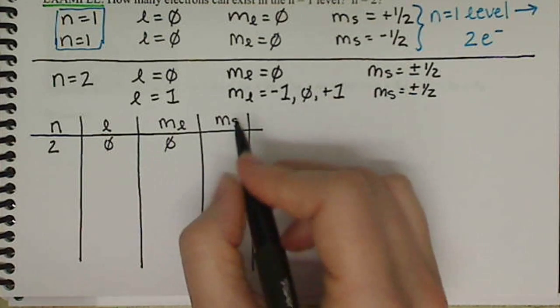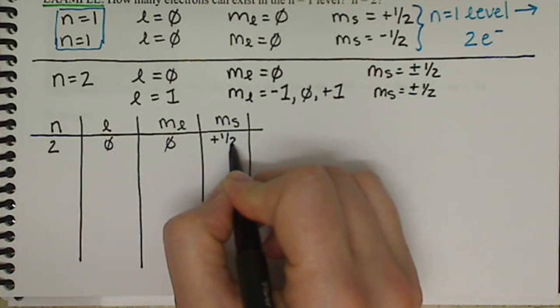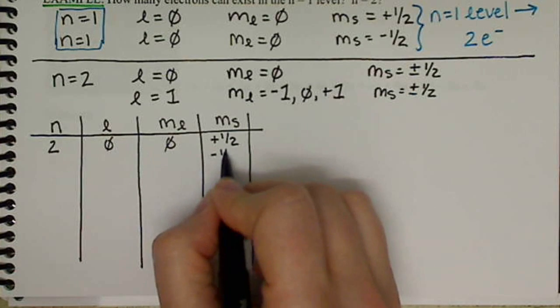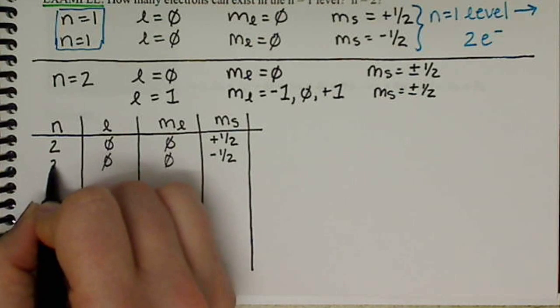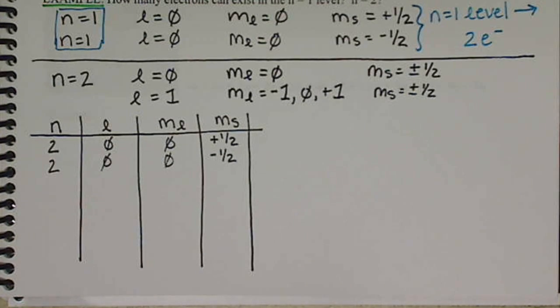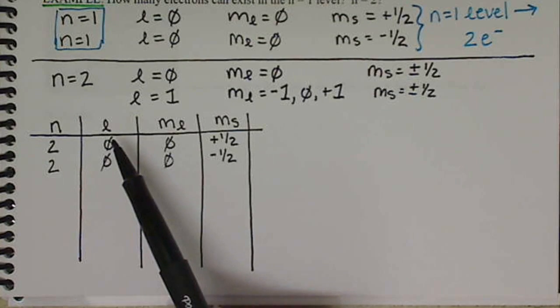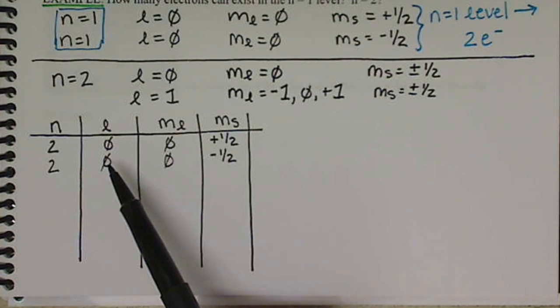And then we have two M sub S values. We have plus 1 half and we have minus 1 half. So M sub L is still 0, L is still 0, and N equals 2. So we've exhausted our values with L equals 0.